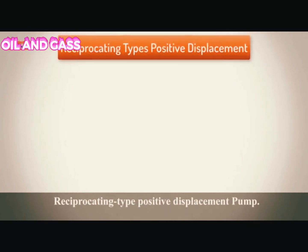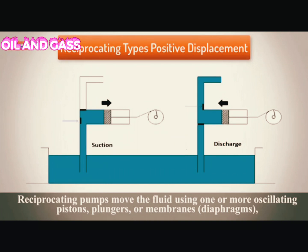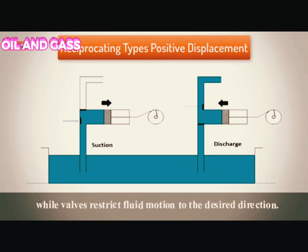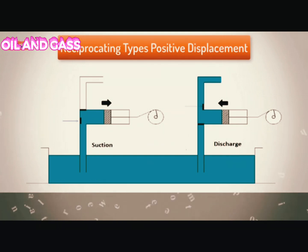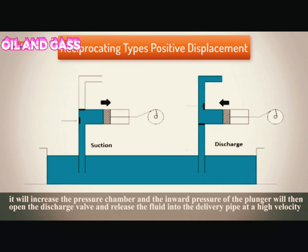Reciprocating type positive displacement pumps move the fluid using one or more oscillating pistons, plungers, or membranes, while valves restrict fluid motion to the desired direction. In order for suction to take place, the pump must first pull the plunger outward to decrease pressure in the chamber. Once the plunger pushes back, it increases the pressure in the chamber, and the inward pressure of the plunger then opens the discharge valve, releasing the fluid into the delivery pipe at high velocity.